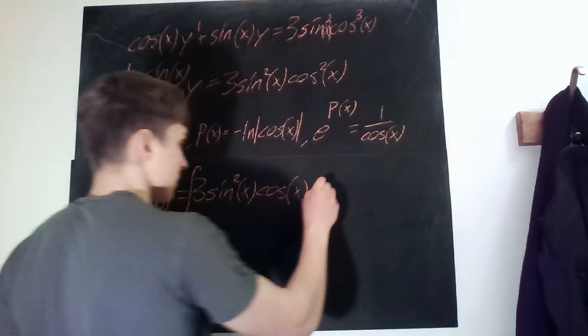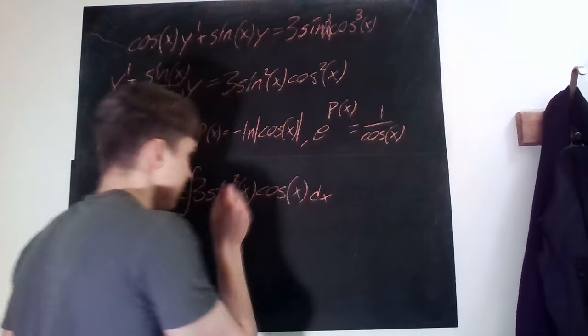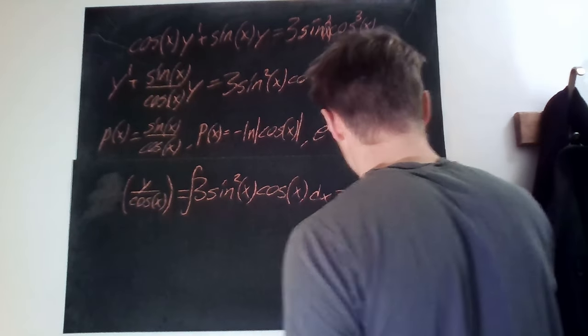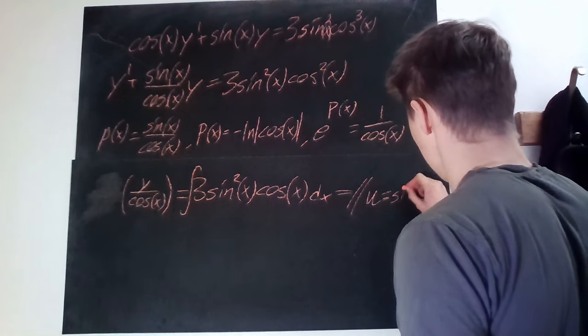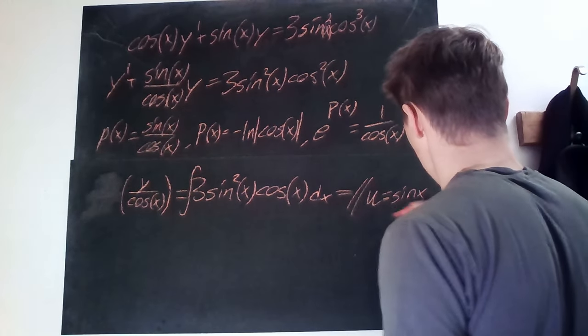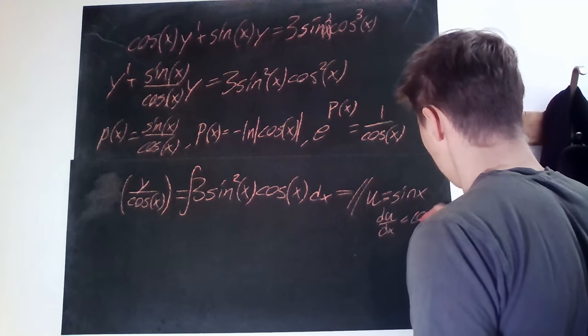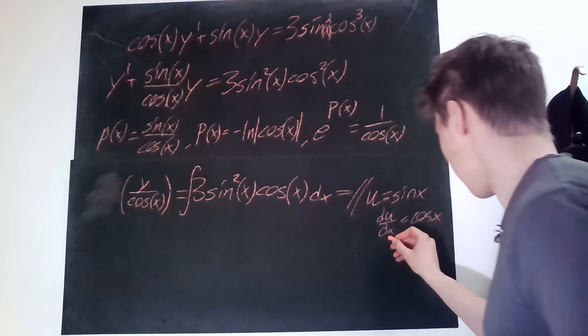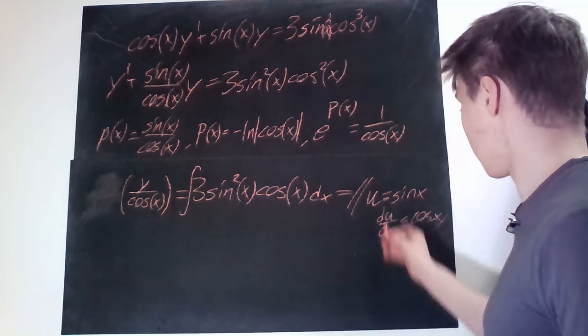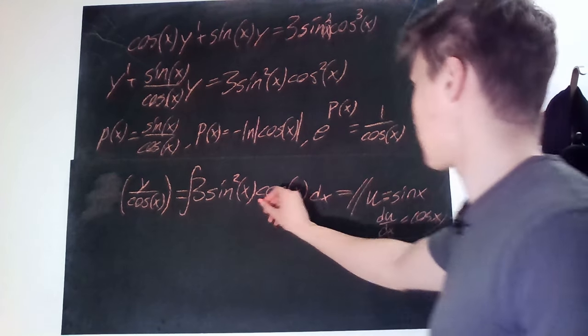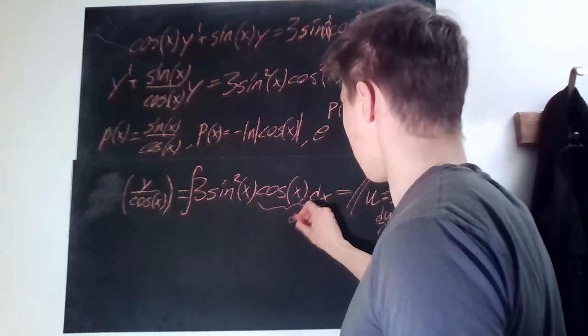dx, of course. And what is the integral of this? Well we make a variable substitution u equals sine x, meaning that du dx equals cosine x, also meaning that dx equals dx times cosine, so this part here is just du.